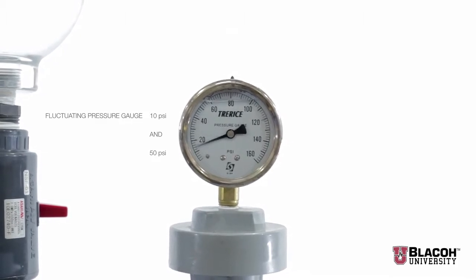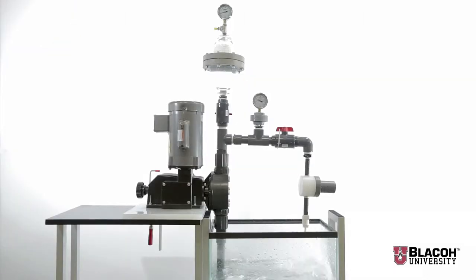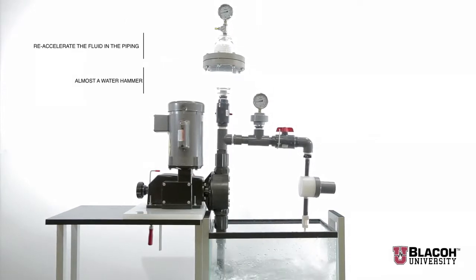The metering pump discharges a very small volume of liquid per stroke. That small fluid volume must re-accelerate the fluid in the piping and in doing so creates almost a water hammer spike.